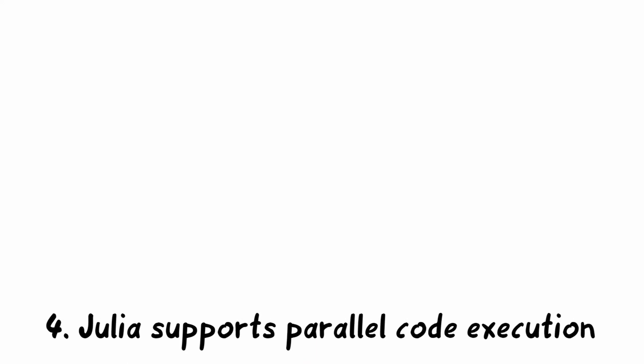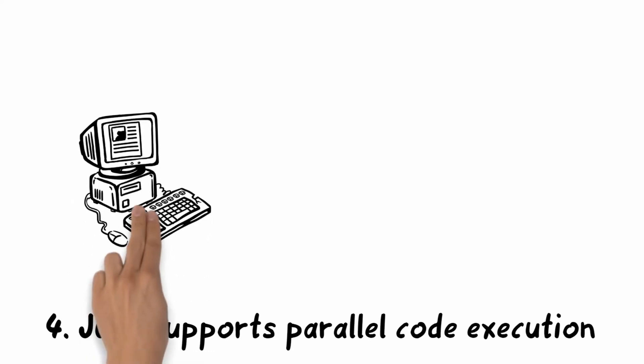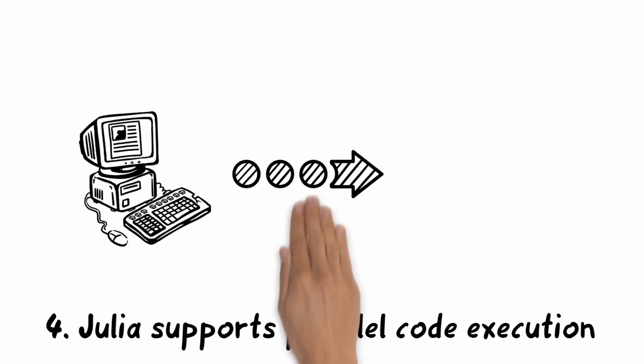4. Julia is made for parallel code execution. Nowadays, programs, especially in the field of big data and data science, don't run only at one computer. They are distributed to many connected computers. Many old languages are not developed for this and so they don't support this functionality. But Julia does.